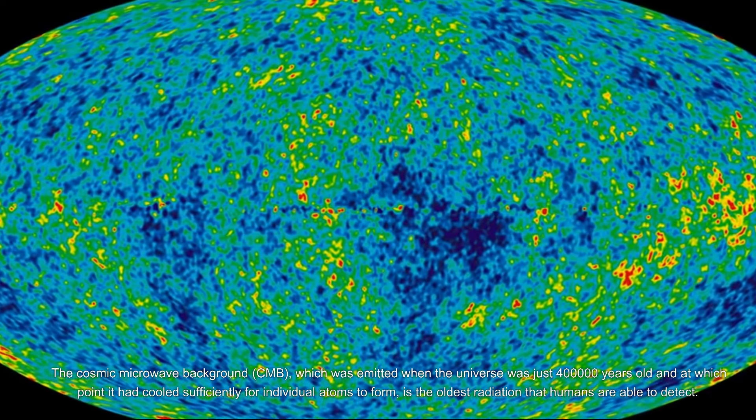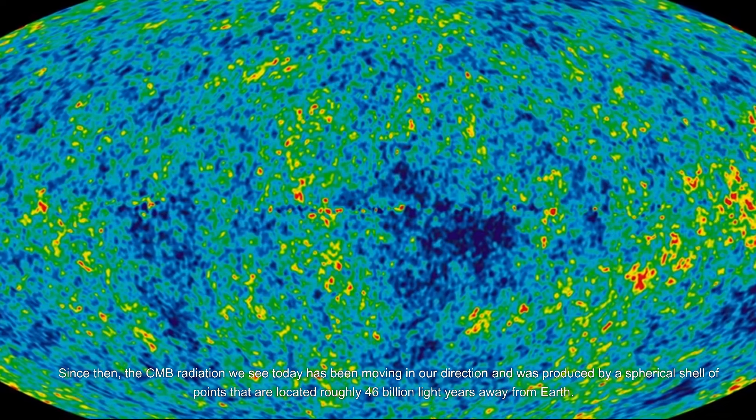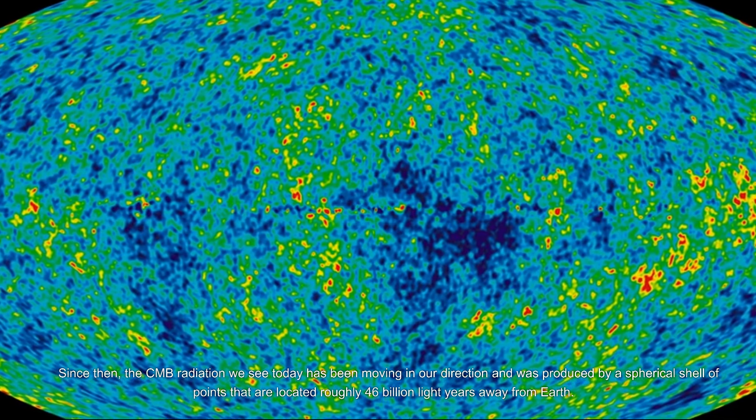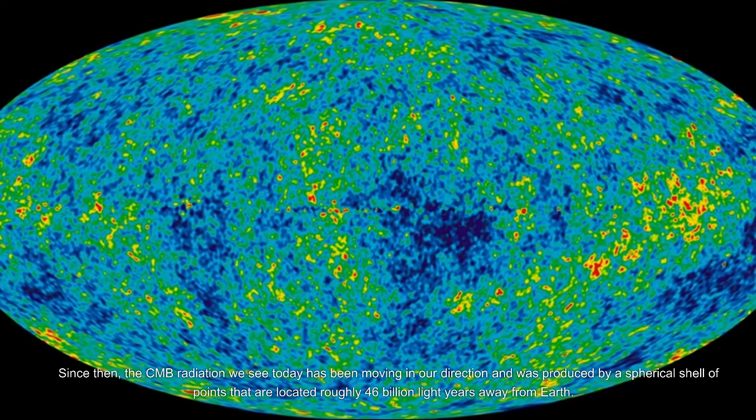Since then, the CMB radiation we see today has been moving in our direction and was produced by a spherical shell of points that are located roughly 46 billion light years away from Earth.